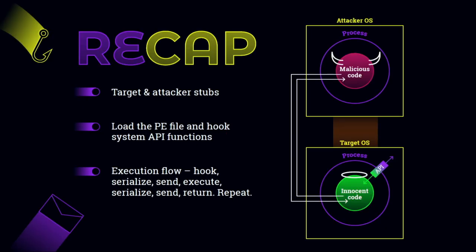Let's have a quick recap. We have two stubs — the attacker side stub and the target side stub — that proxy system API calls over a network tunnel. The attacker side loads the malicious code and hooks some API functions that interact with the target OS. The target side receives the commands, executes the API calls with the arguments, and returns all results — output arguments and return value — serialized into a response message sent back to the attacker side, which deserializes them and returns them to the original caller. The caller is unaware of the proxying, so no modifications are needed. We can take a pre-compiled malicious code and execute it as-is.